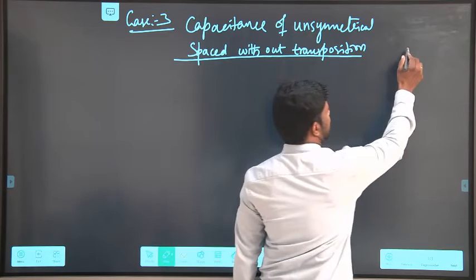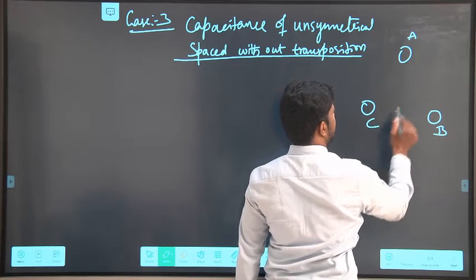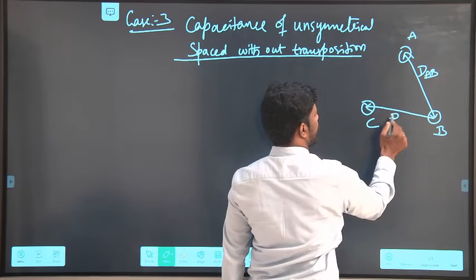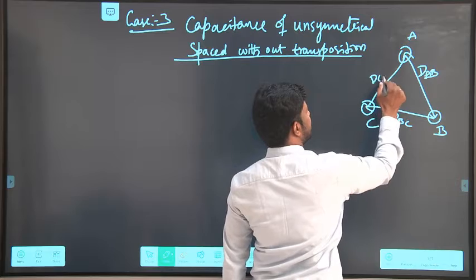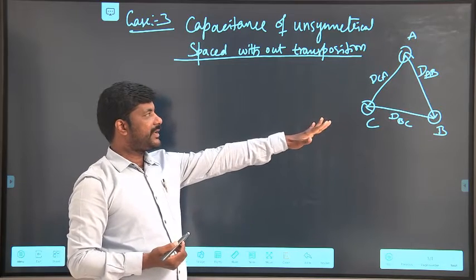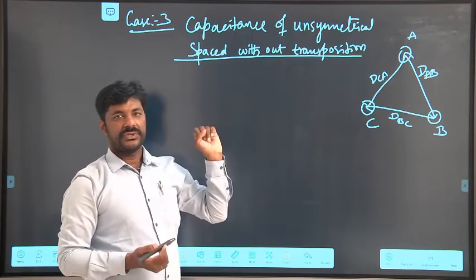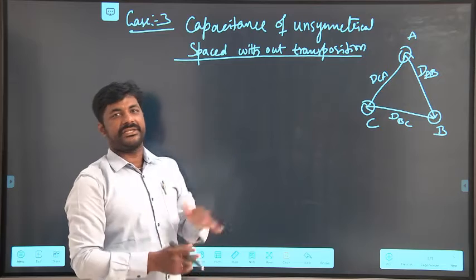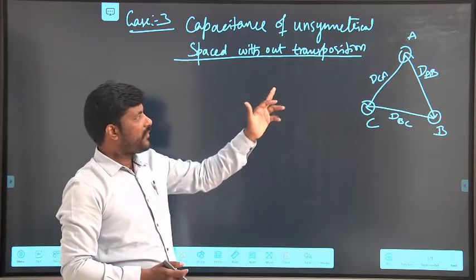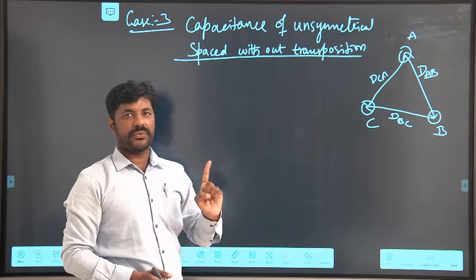I am taking here again three conductors as in the previous case. They are assumed to be A, B, C with separated distances of D_AB, D_BC, and D_CA. We assume that these three distances are unequal. To handle the problem of these unequal distances we went for transposition in Case 2, and this line is without transposition.